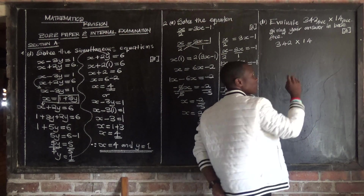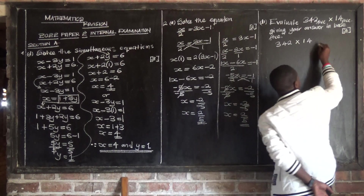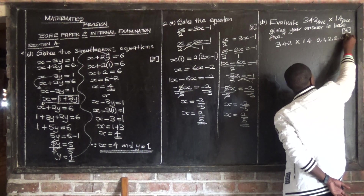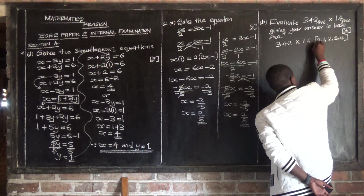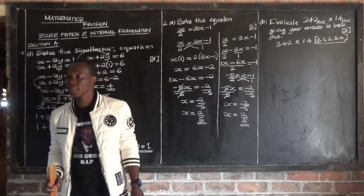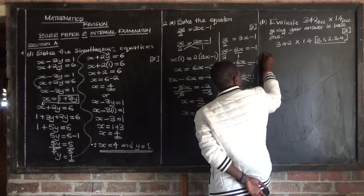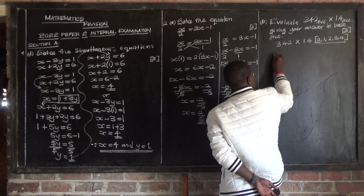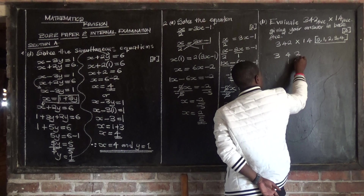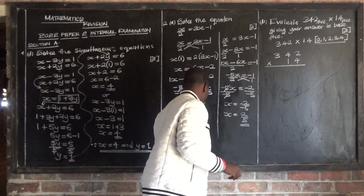We need to take note that in base 5, the only digits we use are 0, 1, 2, 3, and 4. These are the only numbers we consider in base 5. So let's multiply 342 by 14 in base 5.